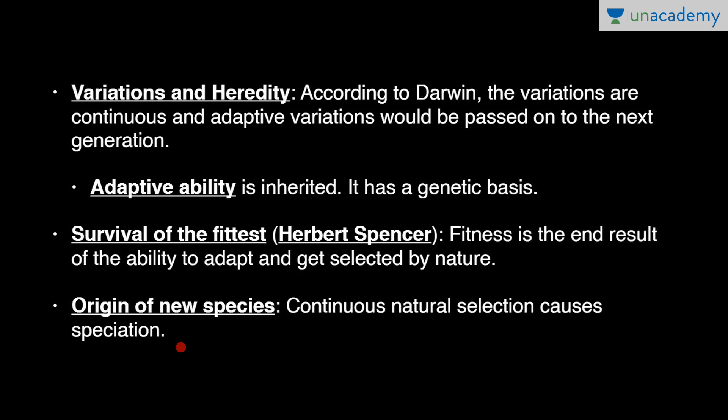Darwin explained that variations appearing due to environmental changes are transmitted to the next generation, making offspring different from ancestors. In each new generation, the process of natural selection repeats. After many generations of continuous natural selection, a new species is formed — this is speciation.